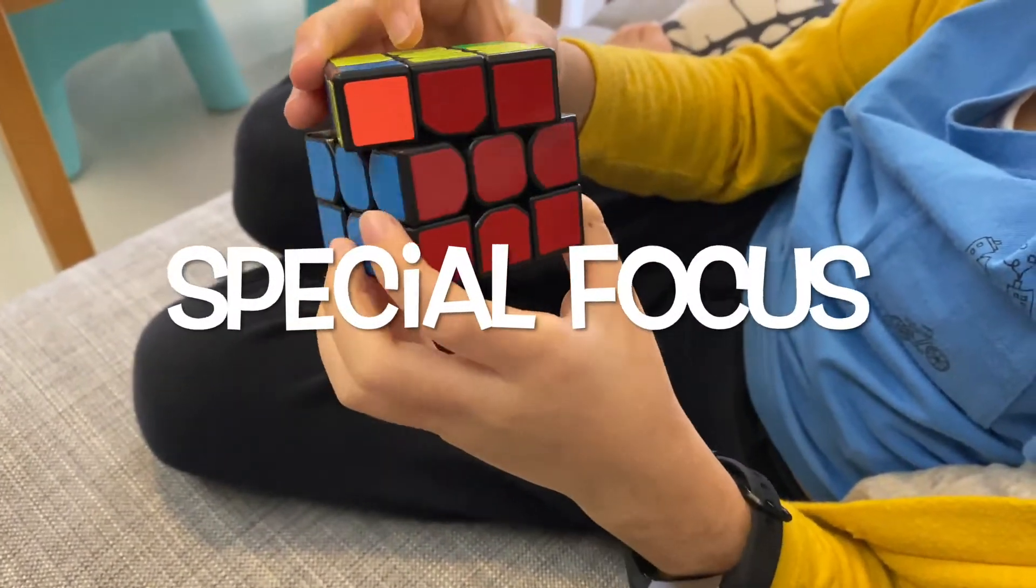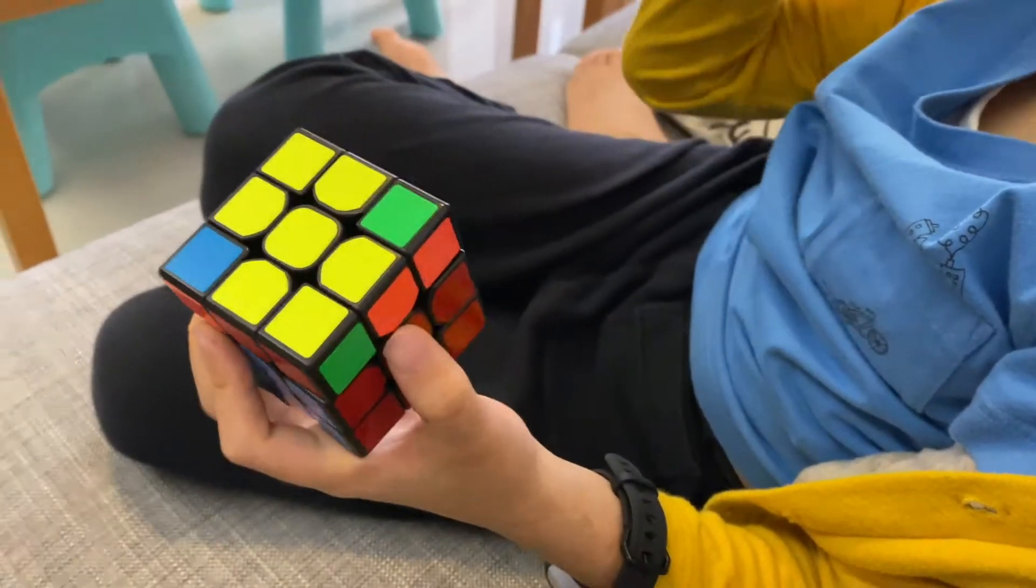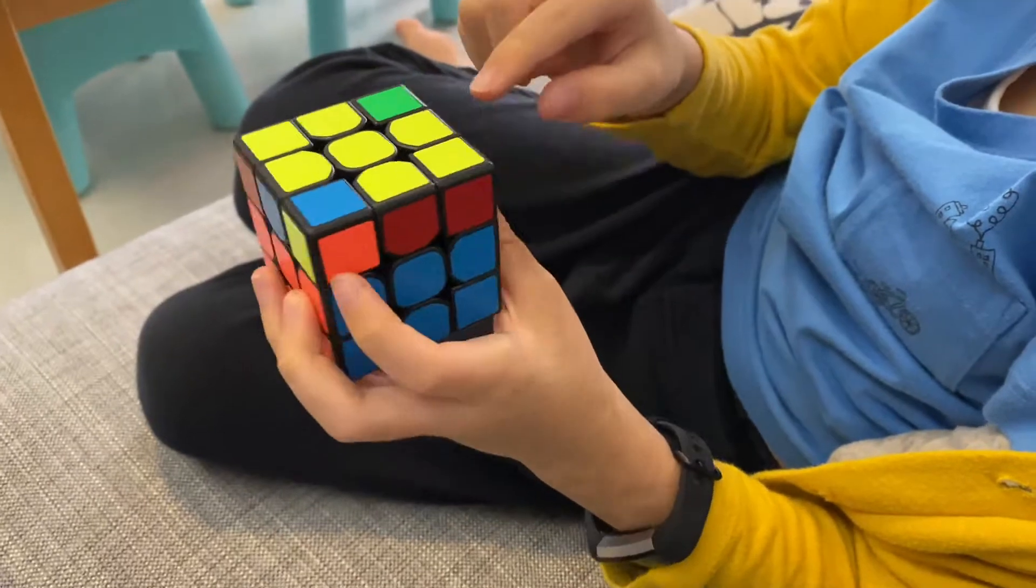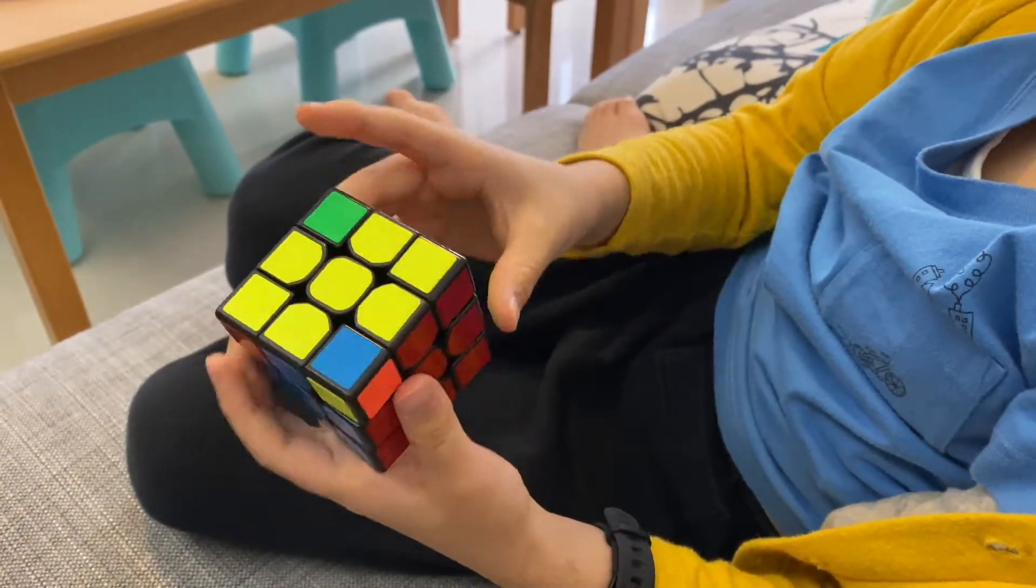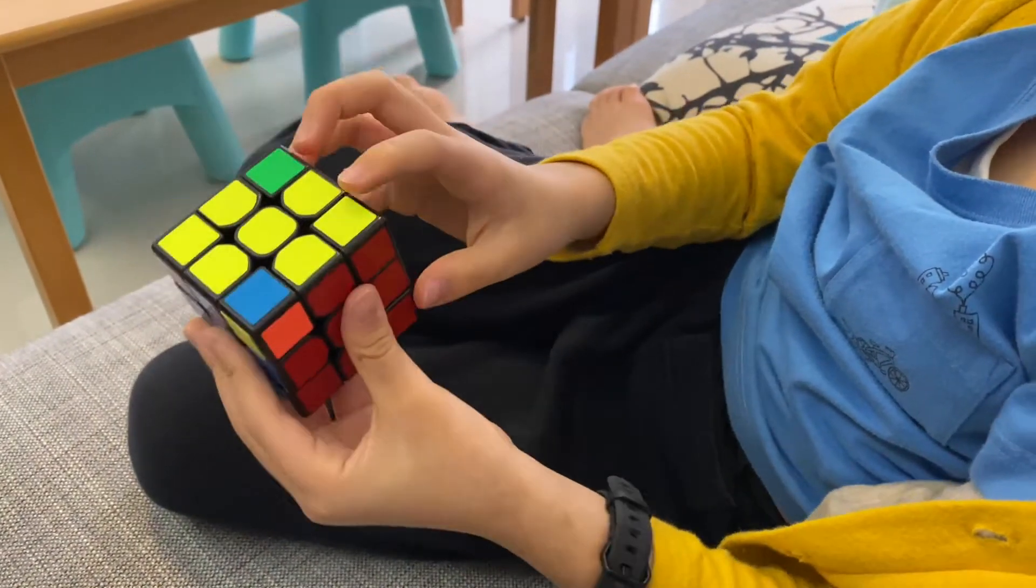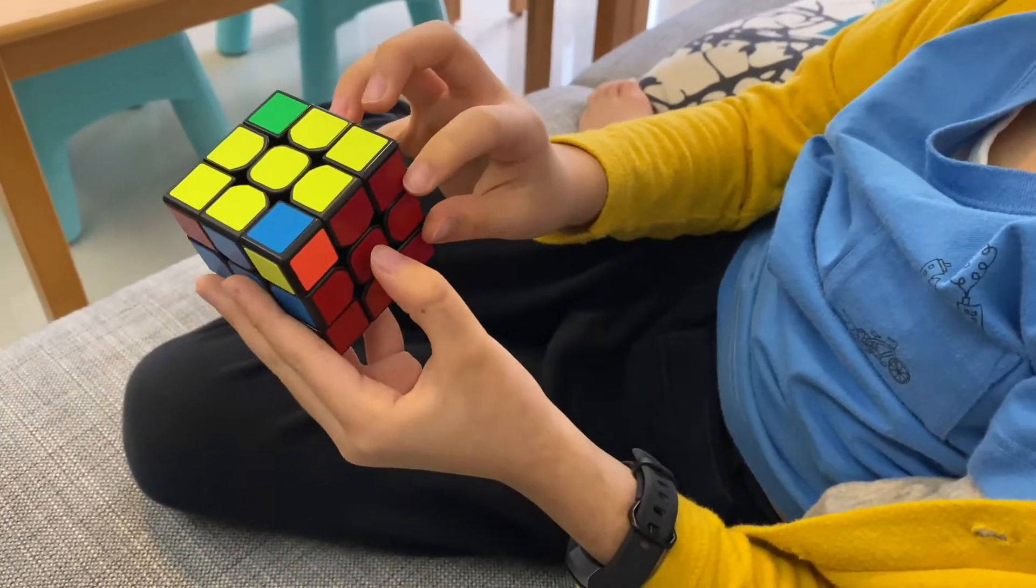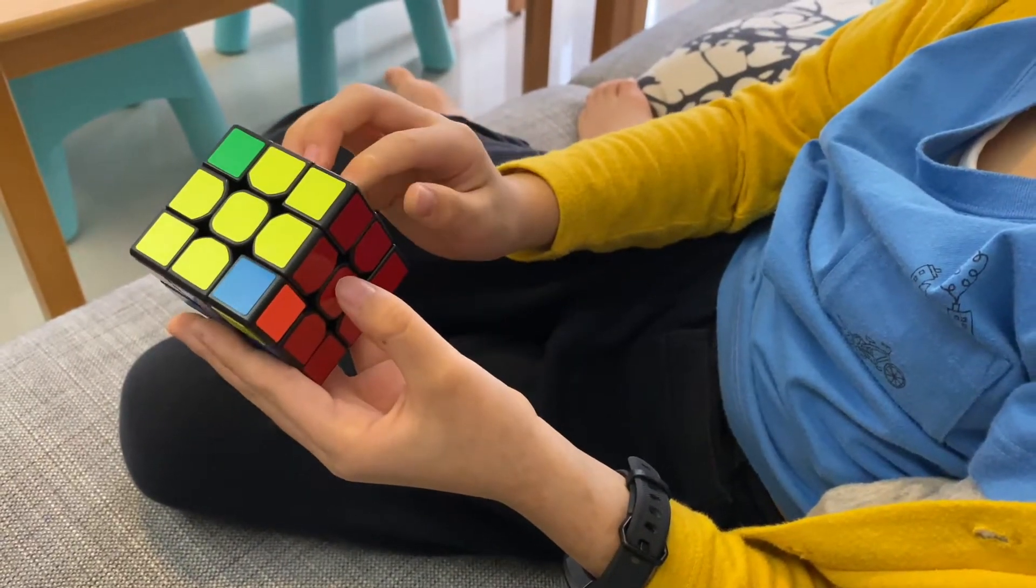Make sure you have to pay attention. Now you have to arrange all the corners in the correct place. For example, like this one. You see red and green between red and the green centers.